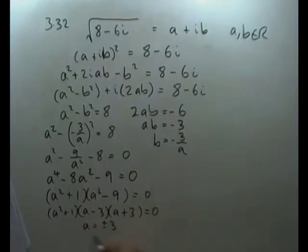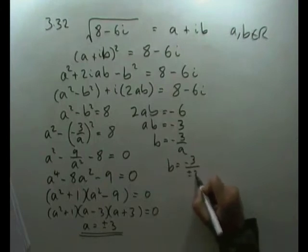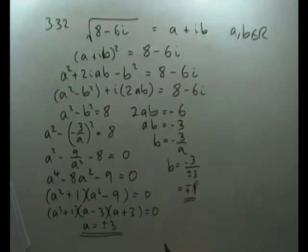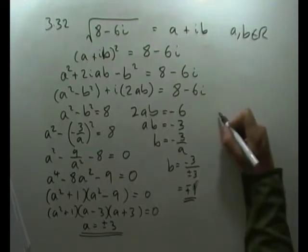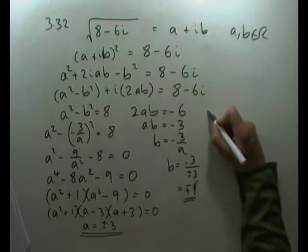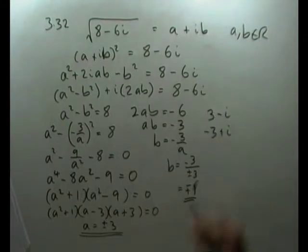If a = ±3, that means b = -3/(±3), so b must equal the opposite, ∓1. The roots are 3 - i or -3 + i.